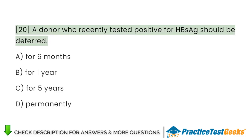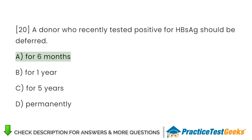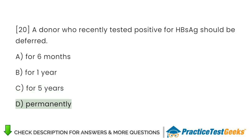A donor who recently tested positive for HBsAg should be deferred: A. For six months. B. For one year. C. For five years. D. Permanently.